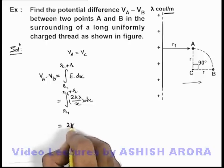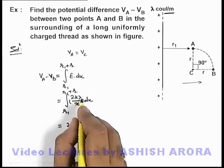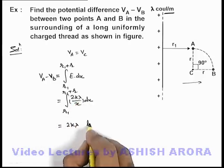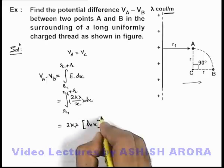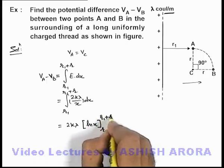So on integrating this will be 2kλ as a constant. Integration of 1 by x dx is ln x which is integrated from r_1 to r_1 plus r.